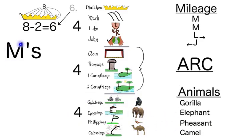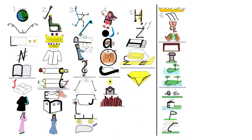The M's and 28 chapters in Matthew, 8 minus 2 equals 6. 4 mileage, 4 ark, 4 animals: gorilla, elephant, pheasant, camel. Now let's review Genesis to Colossians in order. Let's start.